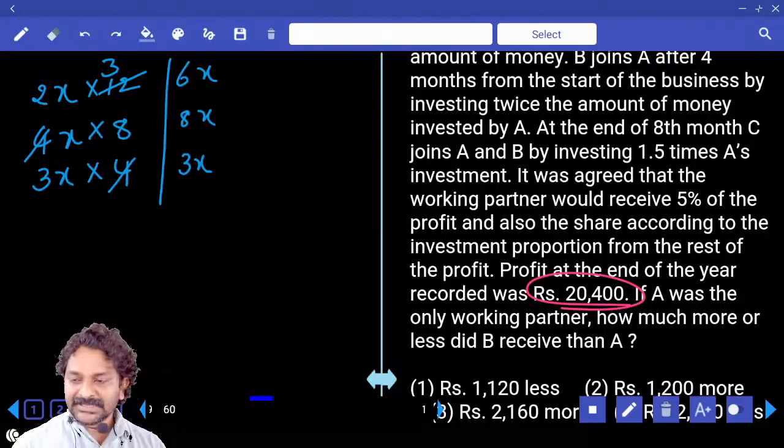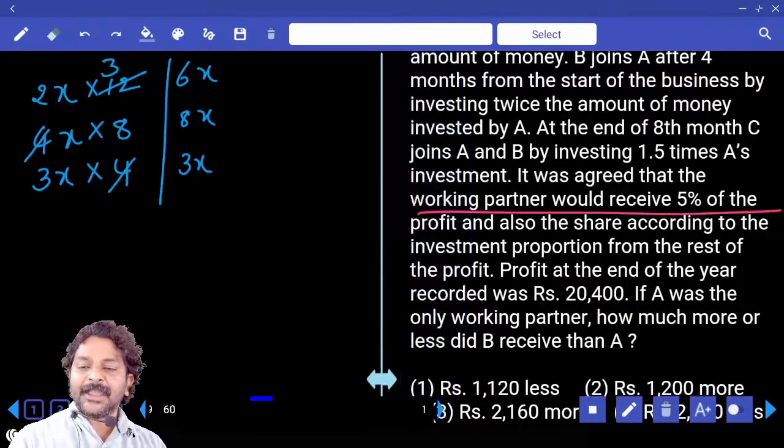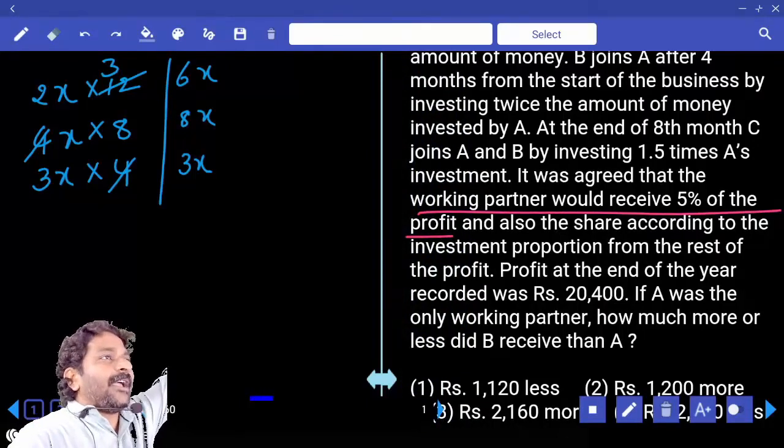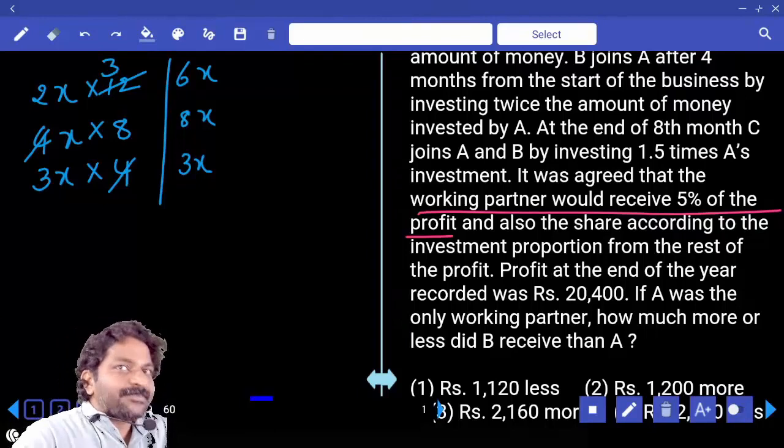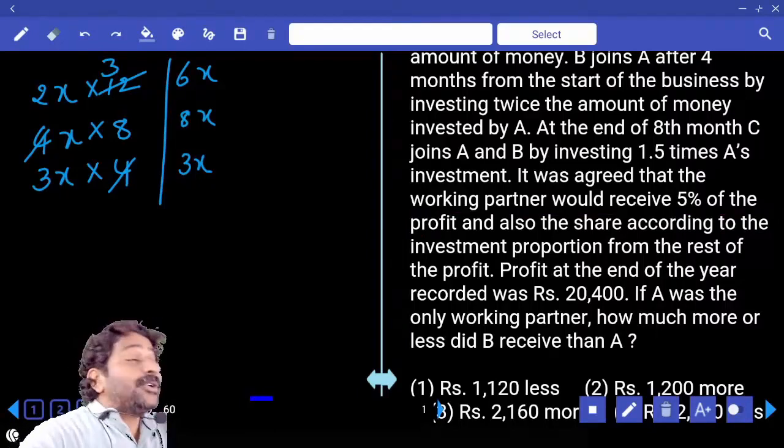No, because there is a working partner and he should get 5% of the profit. Remaining should be distributed among them in investment ratio. Right. So 5%, who should get 5%? 5% of the total profit, right, that is 20,400.